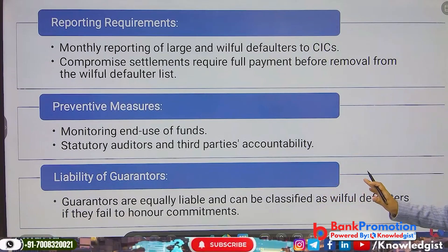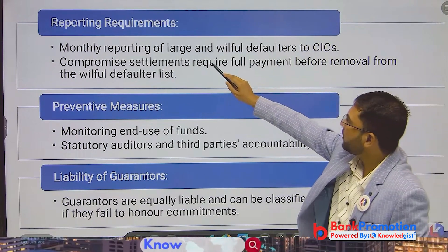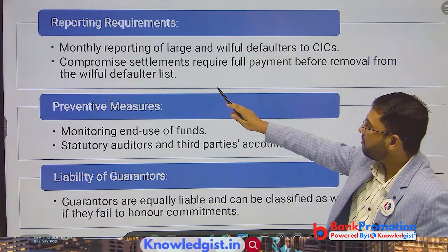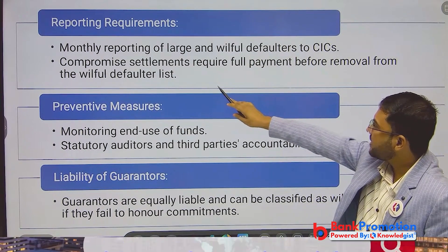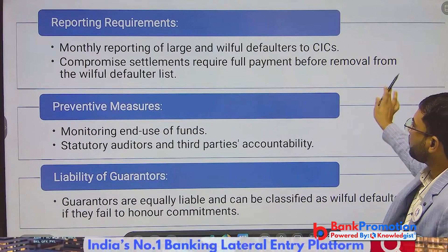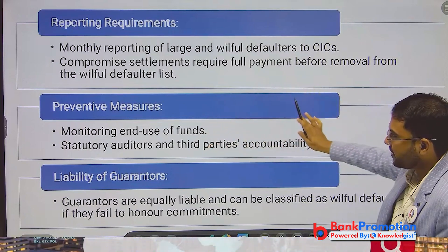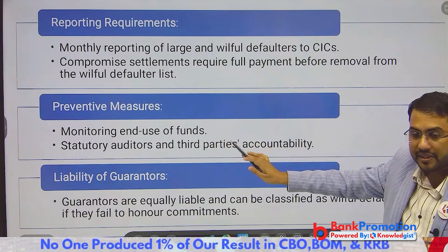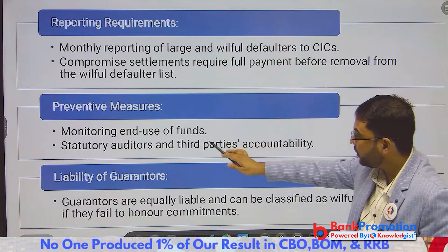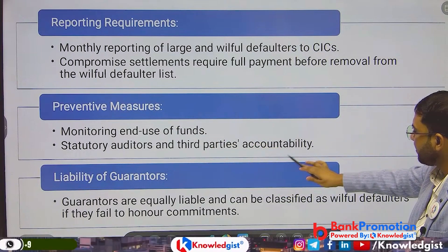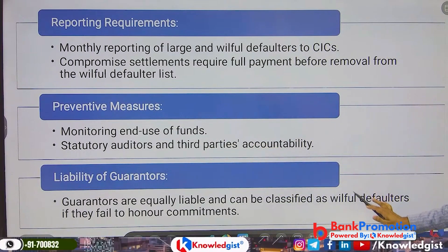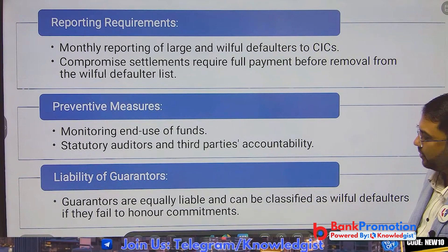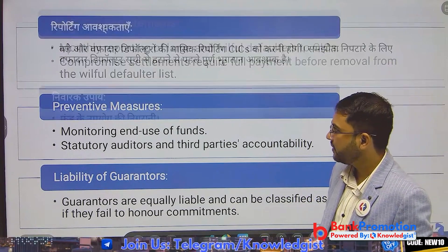Reporting requirements: monthly reporting will be done for large and willful defaulters. Compromise settlements require full payment before removal from the willful defaulter list. Monitoring end use of funds — checking what the money taken is being used for — will be done through statutory auditors and third-party accountability. Guarantors are equally liable and can also be classified as willful defaulters.